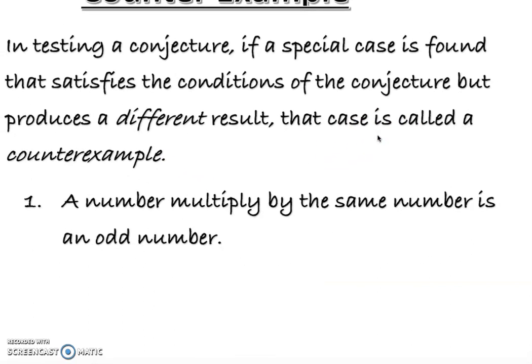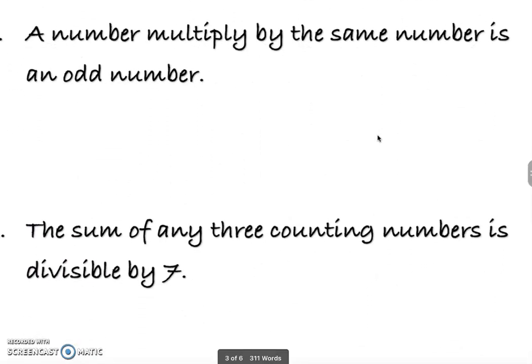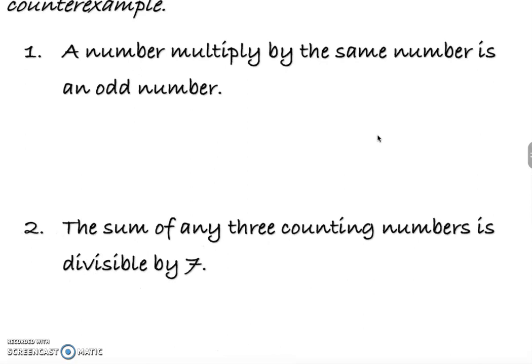I'm going to have this one down here. First one, I have two. So the first one here, as you see, a number multiply by the same number is an odd number. We are trying to have this statement.